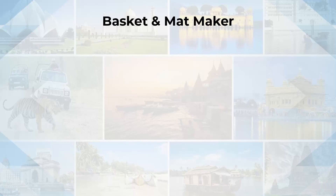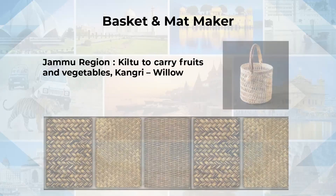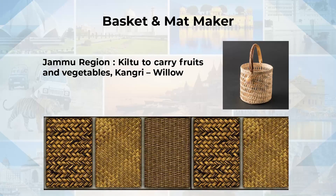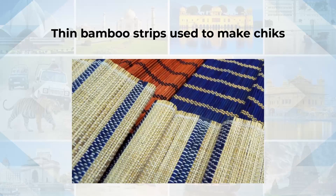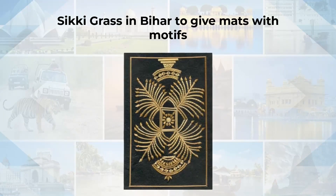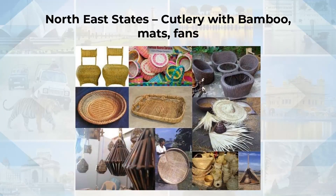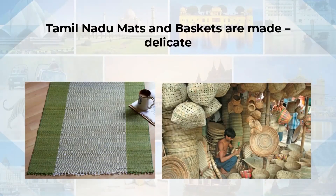The second type is basket and mat making, popular in the Jammu region. Kitlu, also called Kangri, is used to carry fruits and vegetables. The Sarkanda around Delhi and Haryana is used for making mudas. The thin bamboo strips are used to make checks, and the sikki grass popular in Bihar is used to make mats with motifs. Men in the North Eastern states work with cane and bamboo, usually making cutlery, bamboo mats, fans and other items.